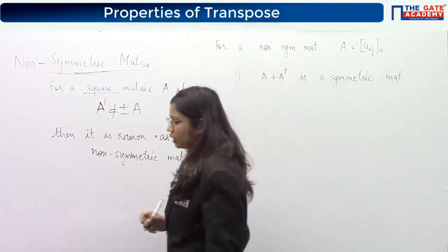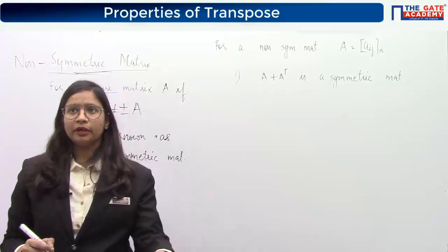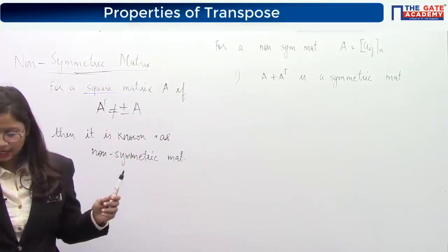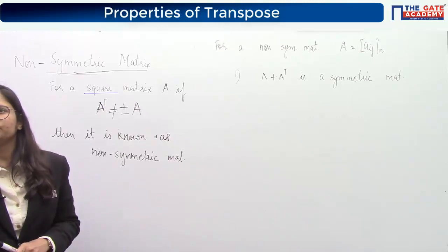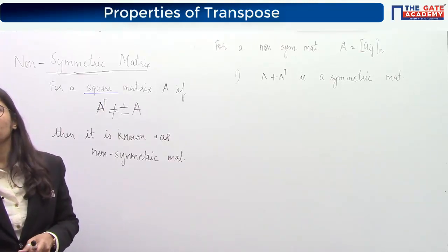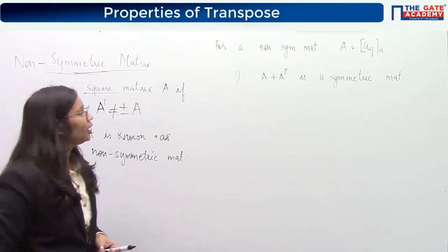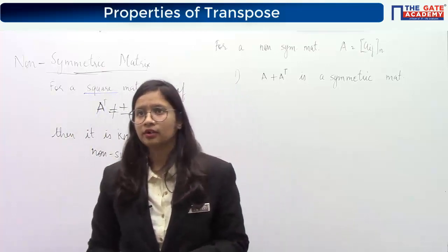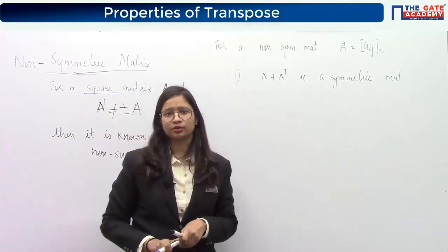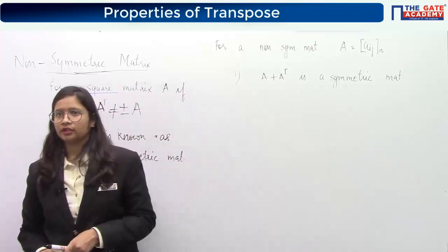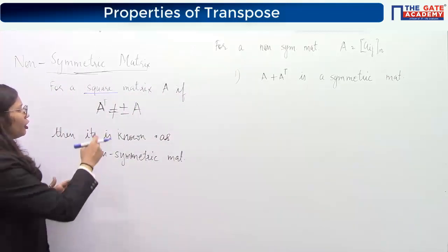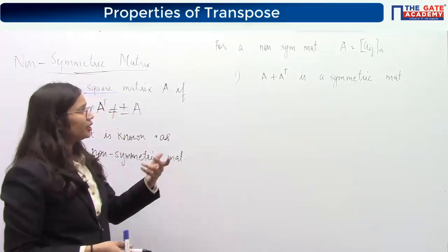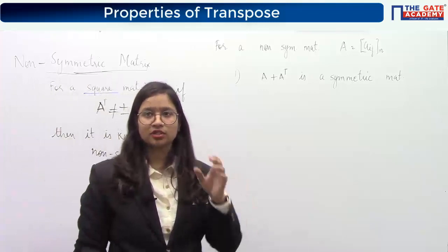For any non-symmetric matrix, if you add that matrix with its transpose, you will always get a symmetric matrix. Non-symmetric is also defined for a square matrix only, not for a rectangular matrix. Because for a rectangular matrix, the transpose is obviously not equal. That is why it is not defined for a rectangular matrix — it is defined for square matrices only.